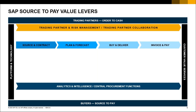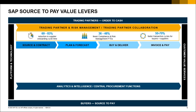Now let's look at the value proposition numbers for SAP Ariba — the source-to-pay value levers. For trading partner order-to-cash, we have seen a 69 to 83 percent reduction in supplier onboarding cycle time. With SAP Supplier Lifecycle and Performance specifically, you get that 69 to 83 percent reduction. We have also seen fewer compliance and risk management issues — up to 36 to 48 percent. There was a 50 to 70 percent faster transaction cycle for buyers and suppliers, with payments happening very quickly.